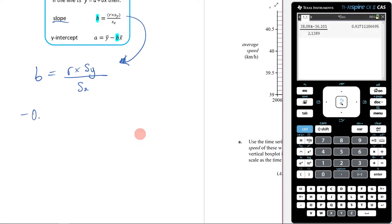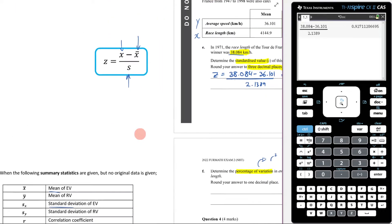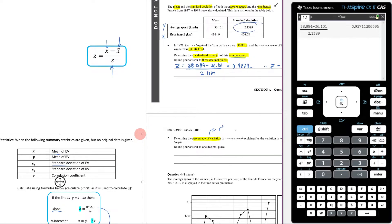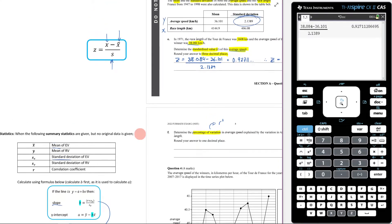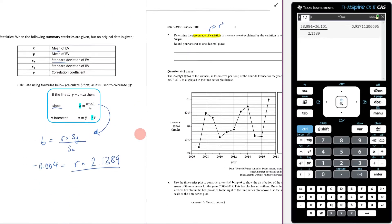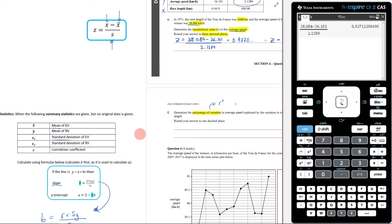And I'm going to go negative 0.004 is equal to r, which is what I'm trying to find. My standard deviation of y is going to be 2.1389 over my standard deviation of x, which will be 406.08.